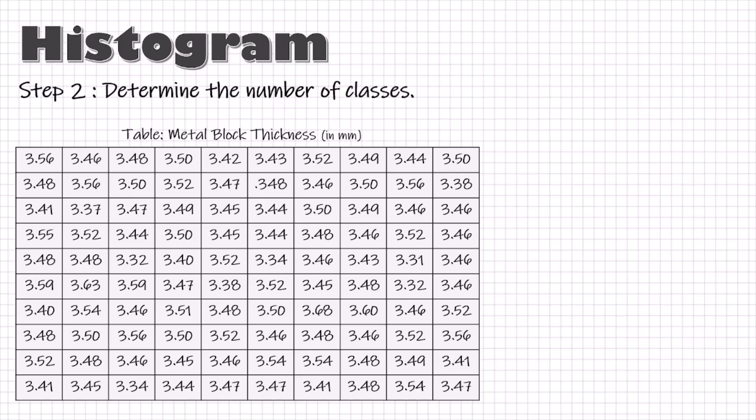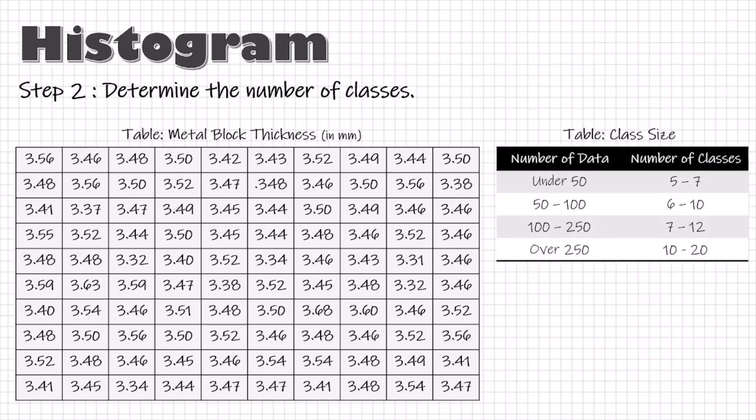Then, determine the number of classes. Depending upon the number of data we have, we can choose the number of classes using this table. So, for our data of 100, we can consider the number of classes as 10. That means we are going to distribute our 100 values in 10 classes.